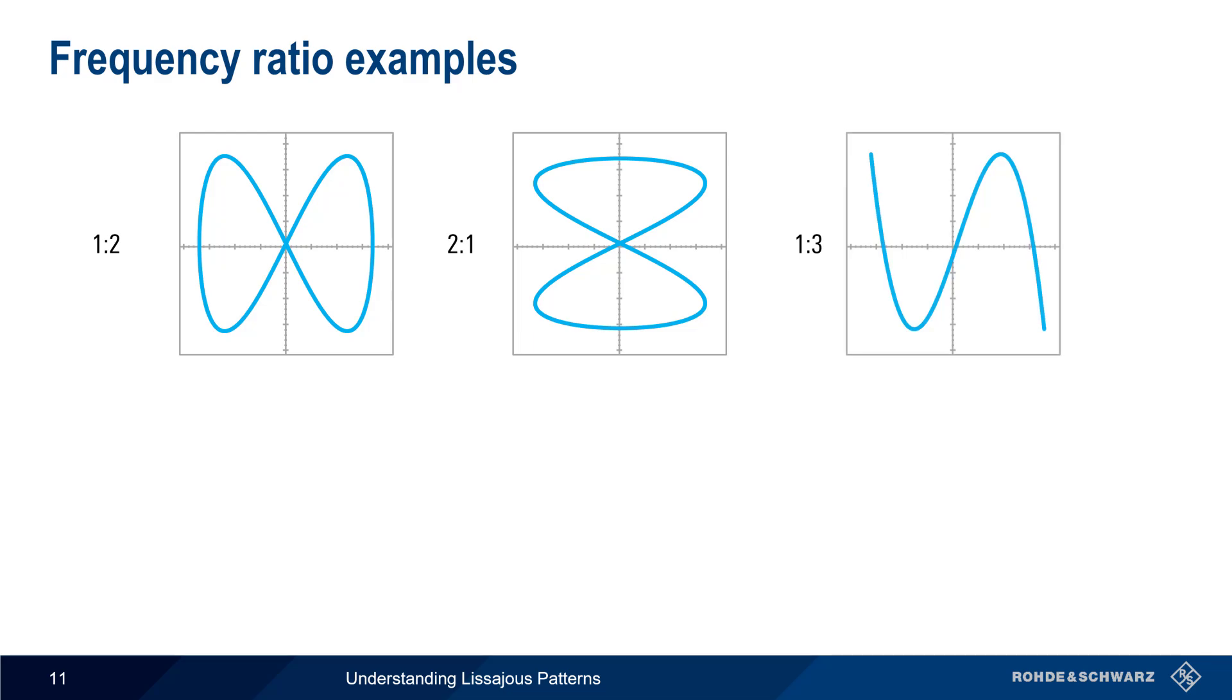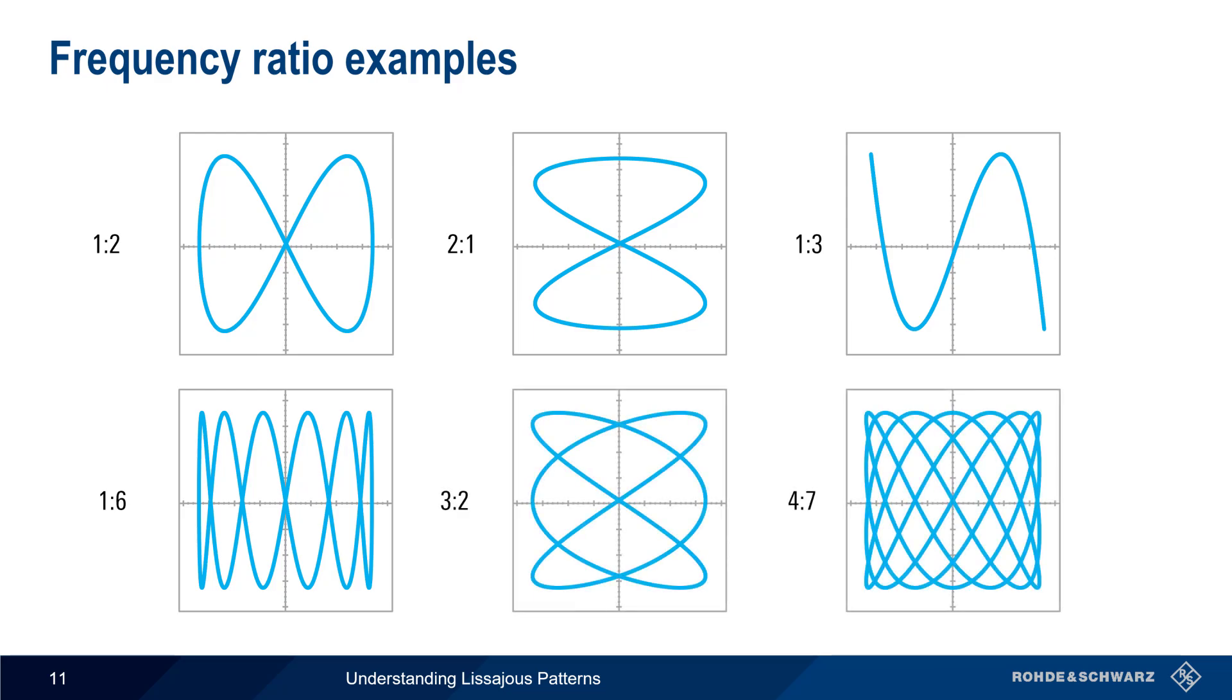Some ratios, such as 1-3, will appear as a line if there is no phase offset between X and Y. And the counting tangencies methodology also works for higher frequency ratios, or non-1 to Y ratios, such as 3-2 or 4-7.